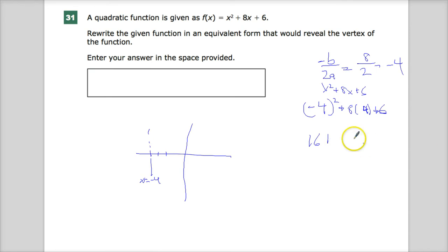16 plus, or sorry, minus 32 minus 32 plus 6. 16 and 6 is 22, minus 32 gives me minus 10. So that means I have a vertex at negative 4 and then way down here at negative 10. And then I can go back through my whole spiel about doing it in vertex form.